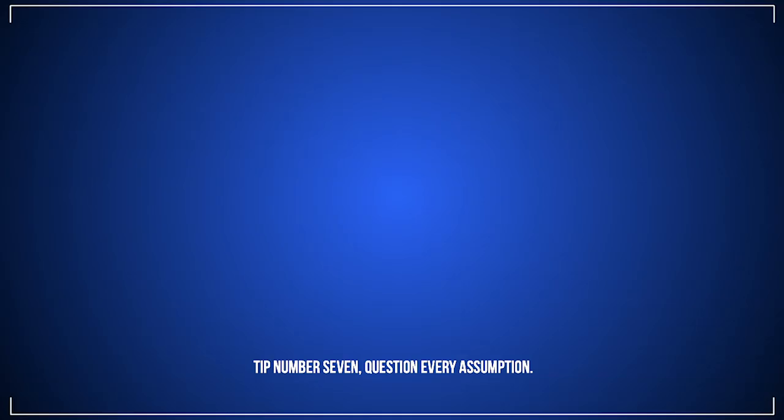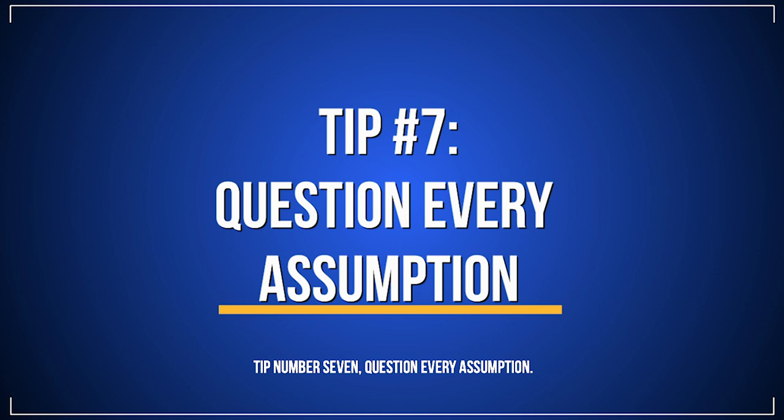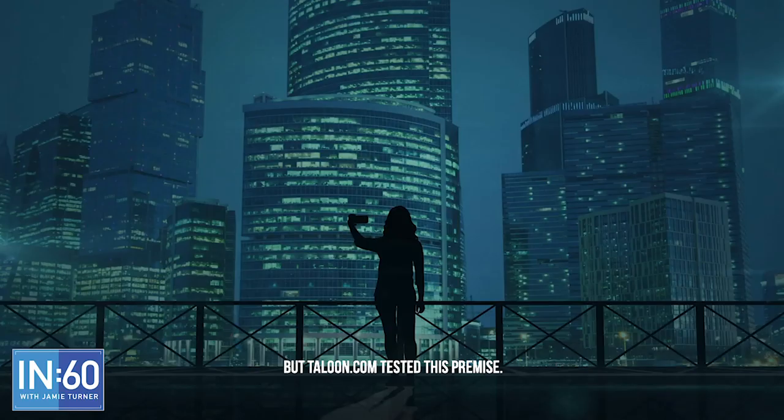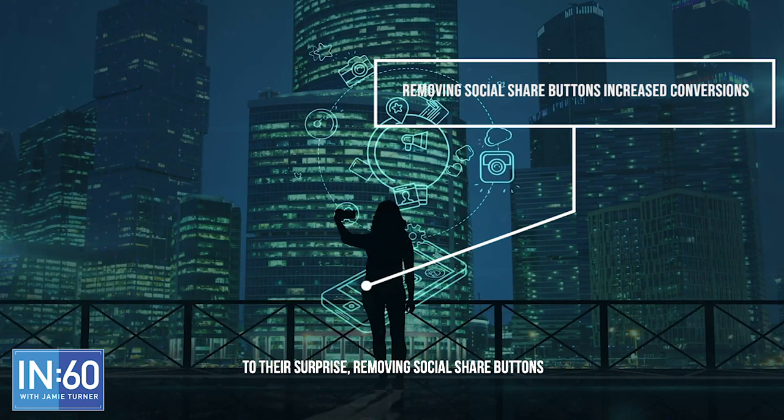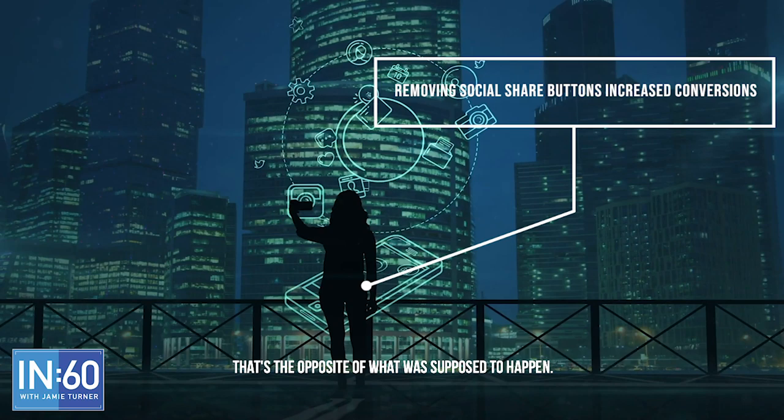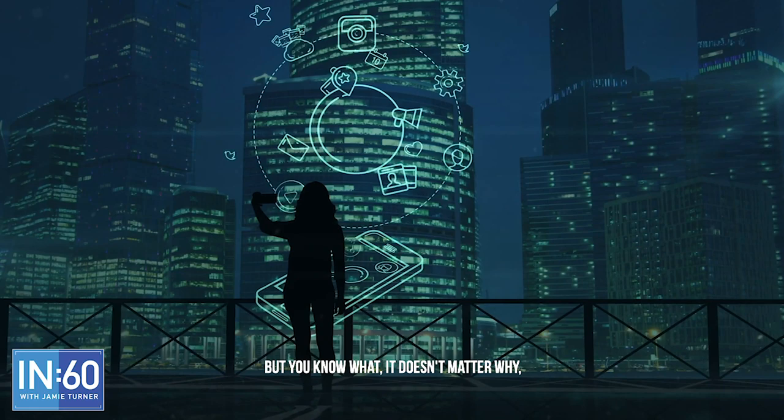Tip number seven: question every assumption. You might have read that including social share buttons increases your conversion rates, but Talent.com tested this premise. To their surprise, removing social share buttons increased conversions 11.9% — the opposite of what was supposed to happen. It doesn't matter why; it just matters that they questioned the assumption and tested their way to success.